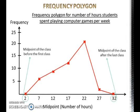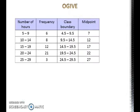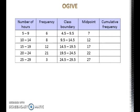Now let's look at how to draw an ogive. To draw an ogive, we must first find the cumulative frequency for each class. The cumulative frequency for the first class is simply the frequency of the class itself. The cumulative frequency of the next class is found by adding the cumulative frequency of the previous class to the frequency of that particular class. This is how we find cumulative frequency.